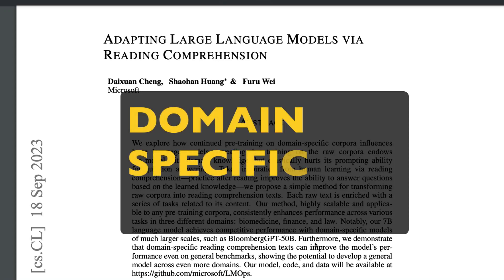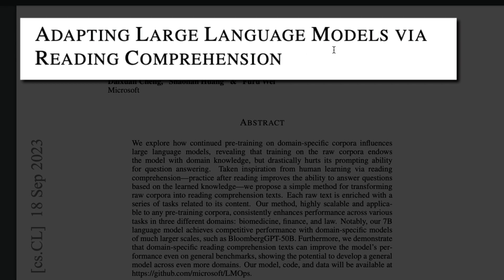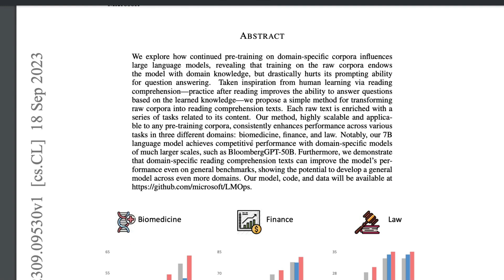How to include domain-specific knowledge in large language models is a question that many people are trying to answer. The latest paper from Microsoft, 'Adapting Large Language Models via Reading Comprehension,' introduces a new approach. It argues that continued pre-training on domain-specific corpora may hurt the prompting ability of LLMs, and proposes an alternative method inspired by how human beings learn.